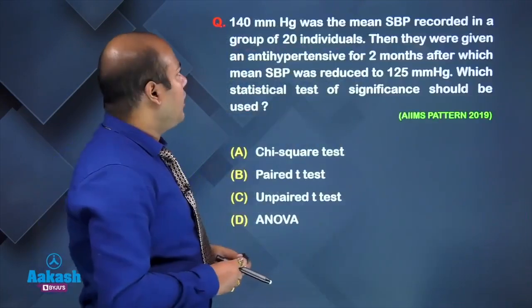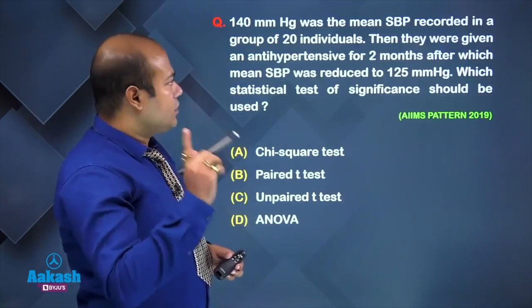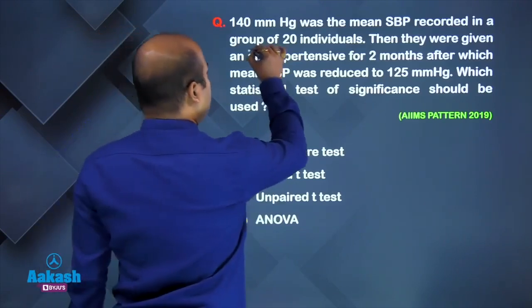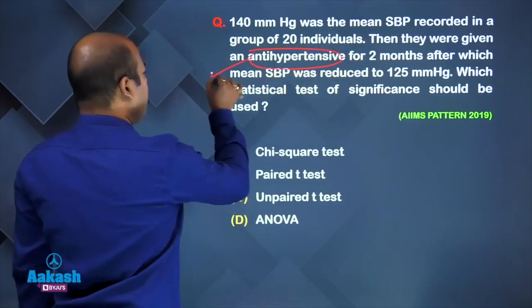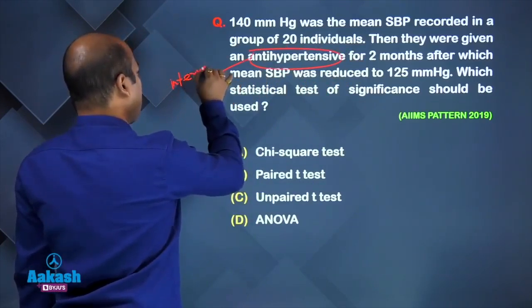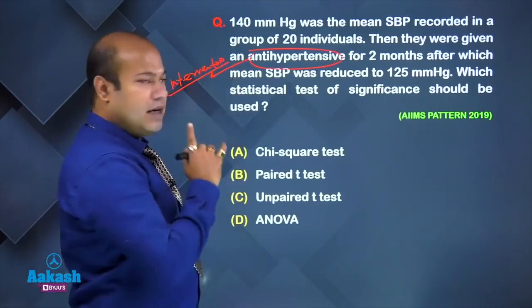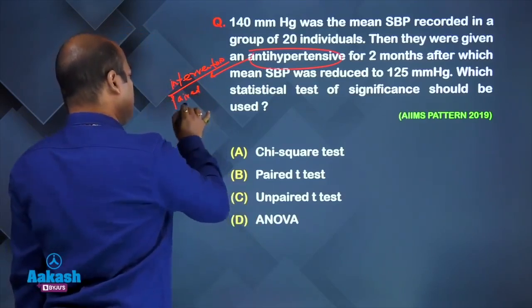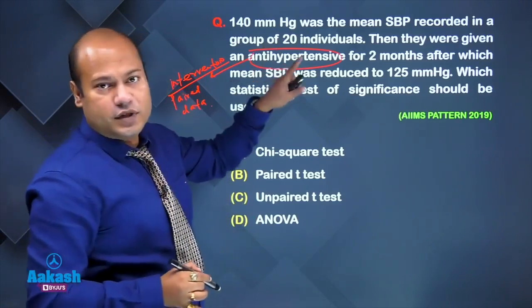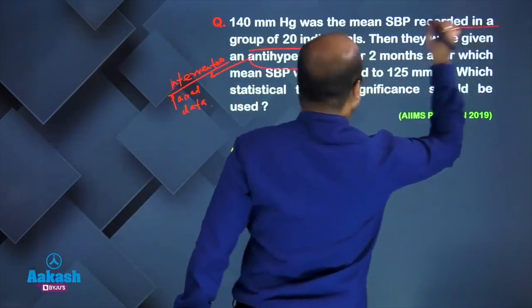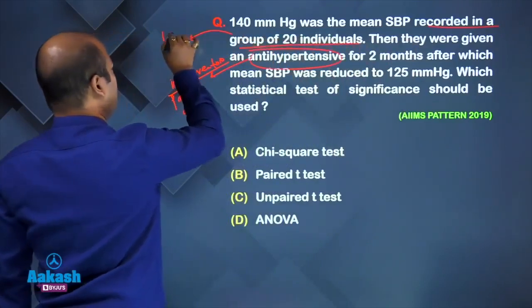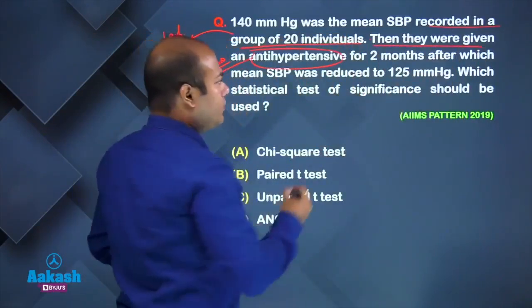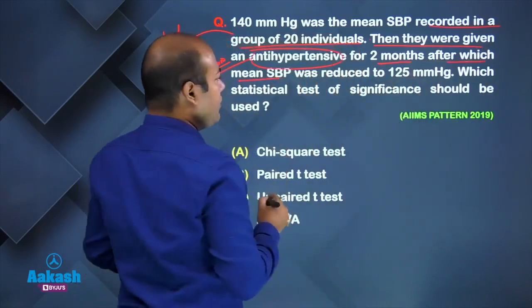Let's discuss an example: 140 mmHg was the mean systolic blood pressure recorded in a group of 20 individuals. They were given an anti-hypertensive — so an intervention is being done. Whenever an intervention is done, the data becomes paired data. There is one group of 20 individuals.